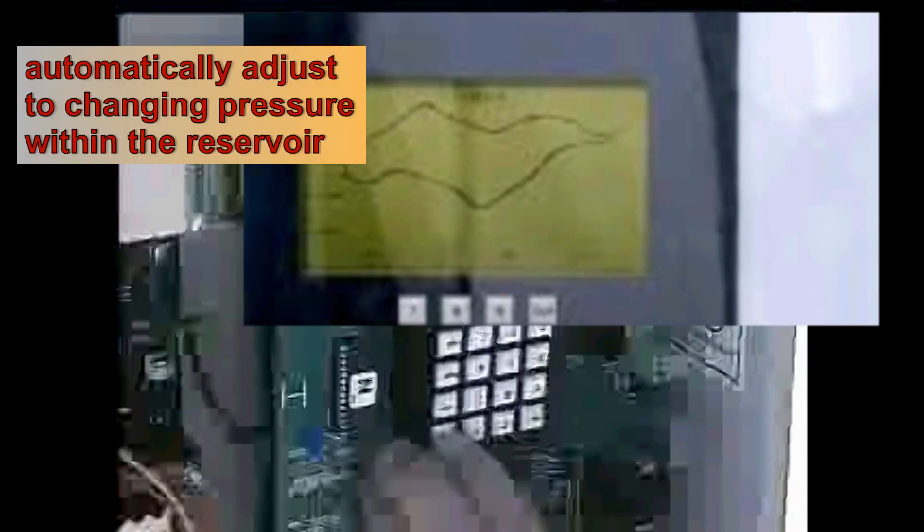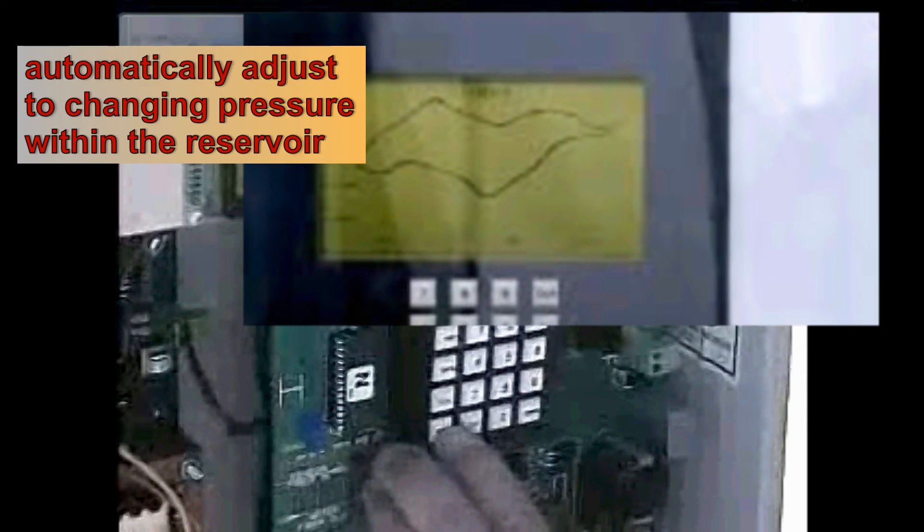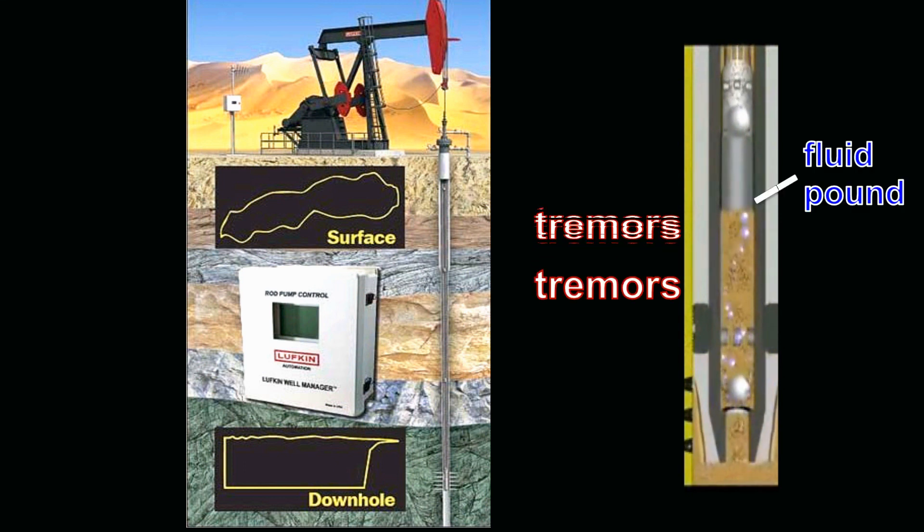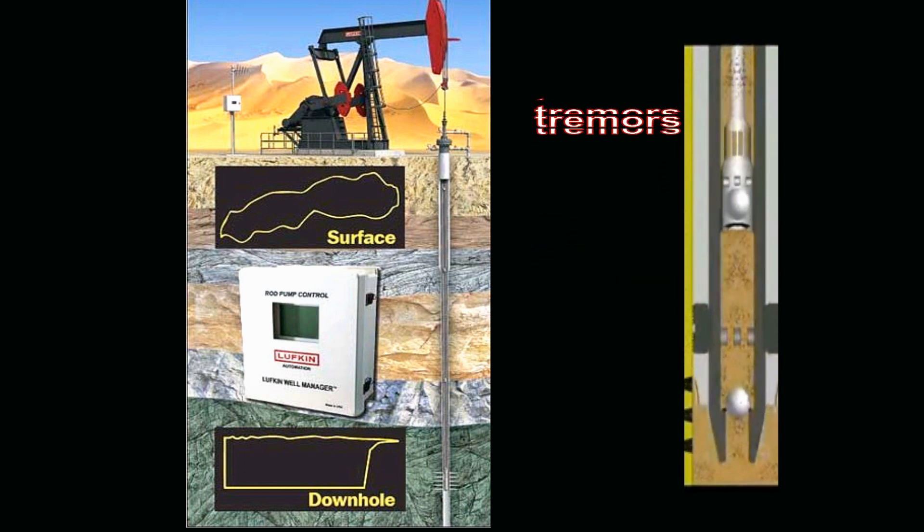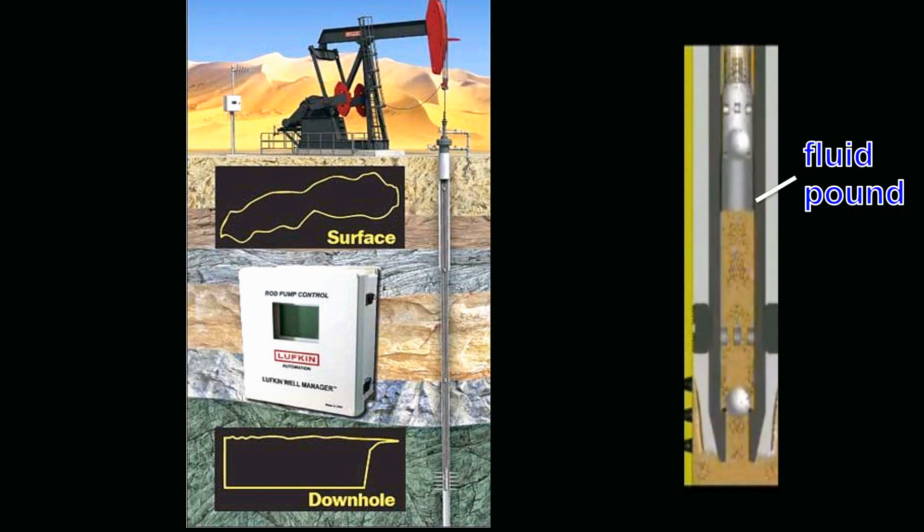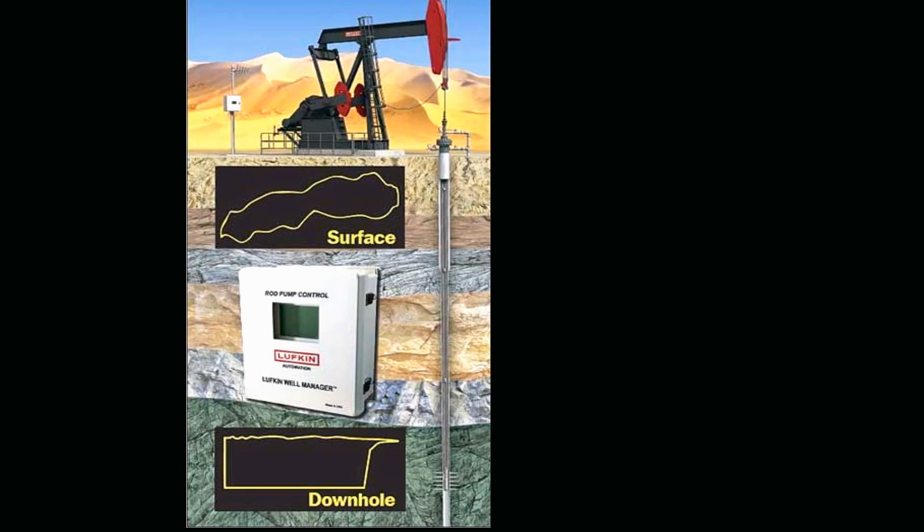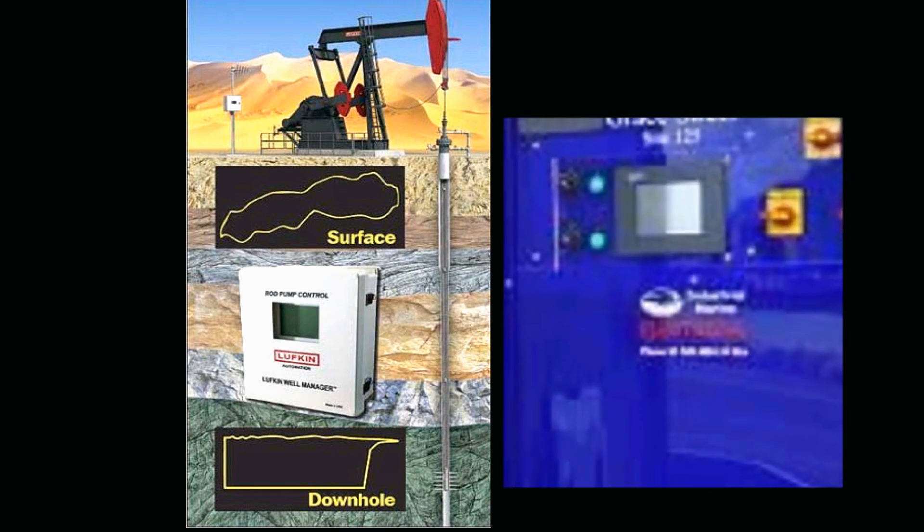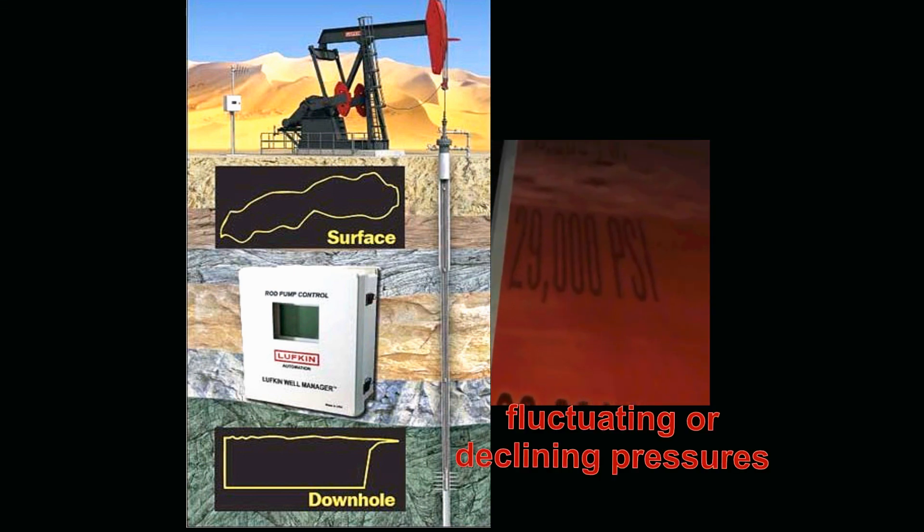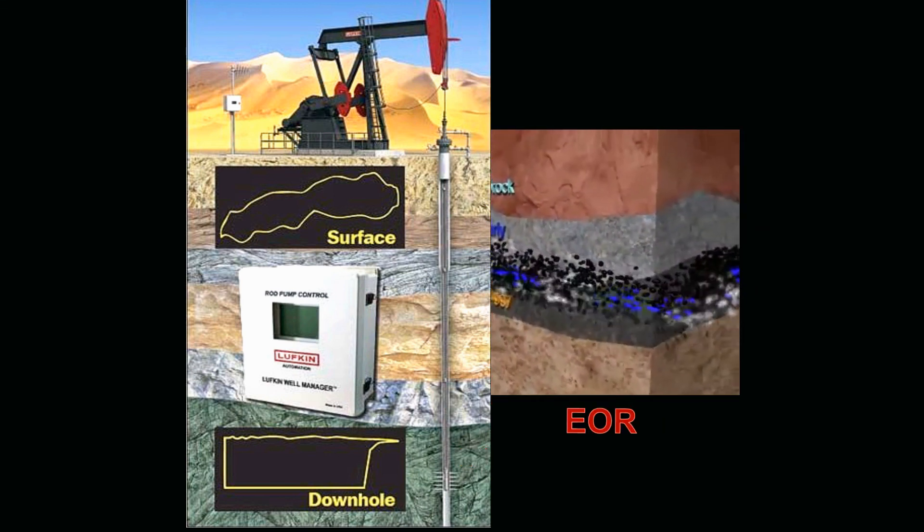Pump-off controllers automatically adjust to changing pressures within the reservoir to optimize oil flow. Here, in this example, pump-off controllers sense the first tremors in a fluid pound and can, therefore, automatically shut off electric power to the pumping unit before any damage is done. Restarting again after approximately 15 minutes, they can function until once again they sense a problem. Pump-off controllers are especially useful in reservoirs where reservoir pressures fluctuate or decline or when enhanced oil recovery processes start to stimulate the well.